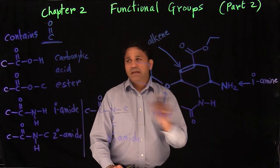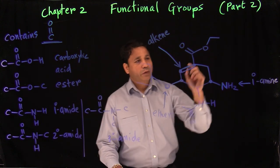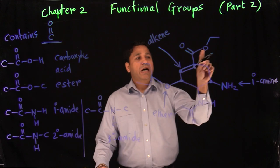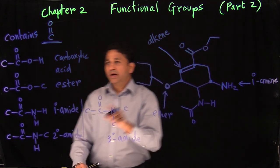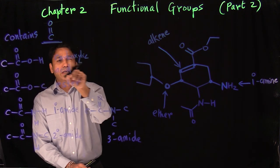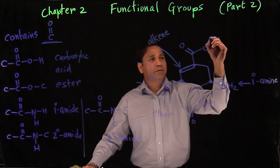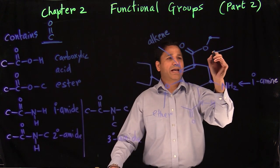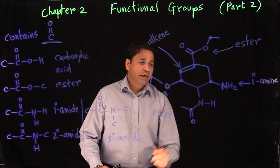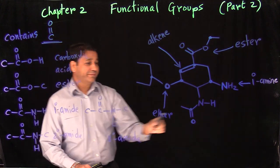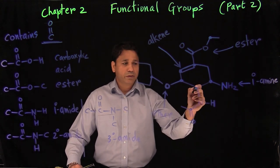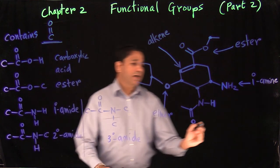Now looking at the part with a carbon-oxygen double bond attached to an oxygen — it belongs to the third category. If that oxygen's other bond is a hydrogen, it's carboxylic acid; but here the oxygen is further attached to a carbon, so this is an ester. Then there's a carbon-oxygen double bond attached to a nitrogen with one hydrogen and one carbon — that becomes a secondary amide.